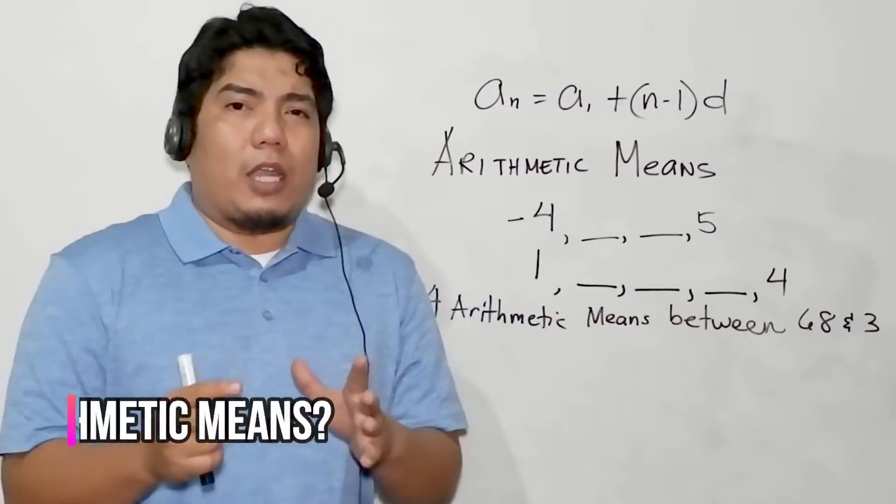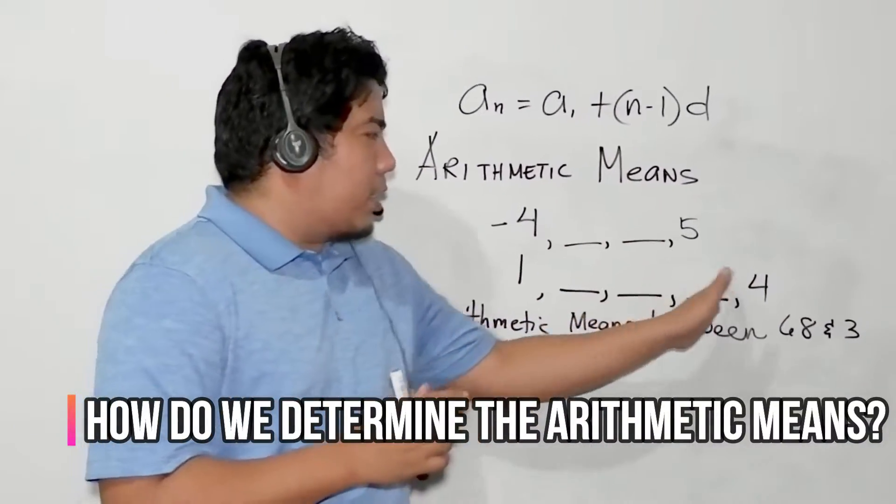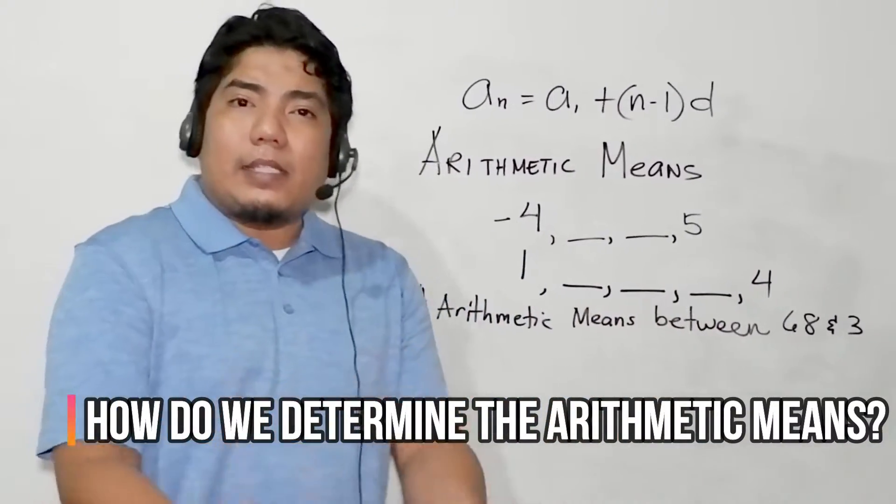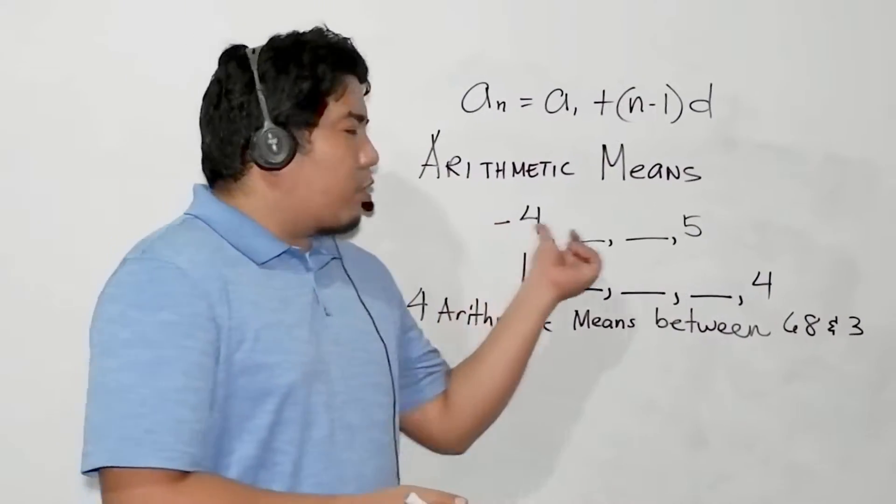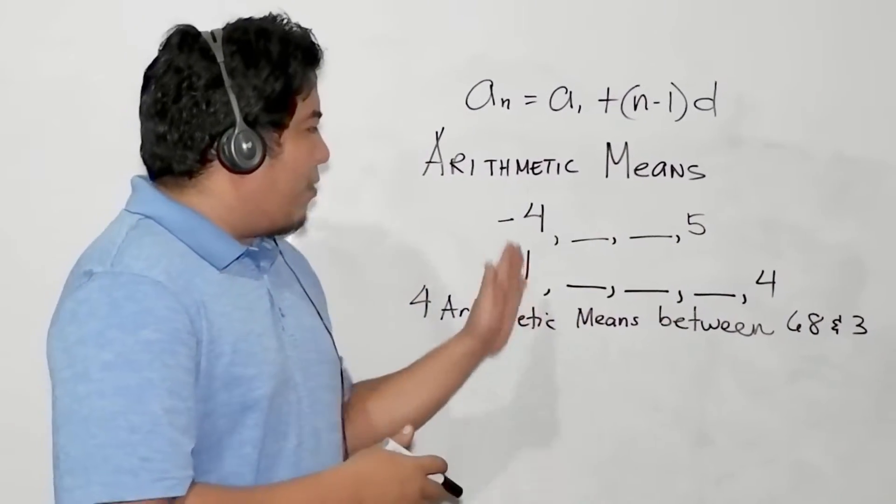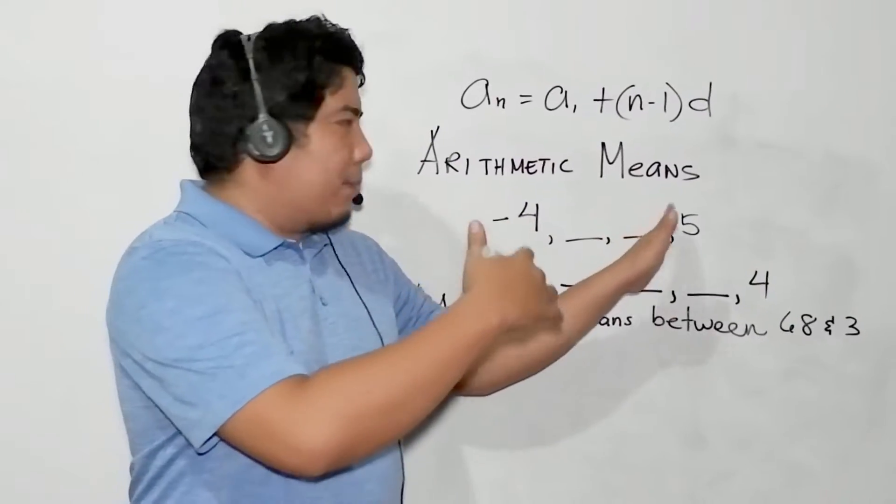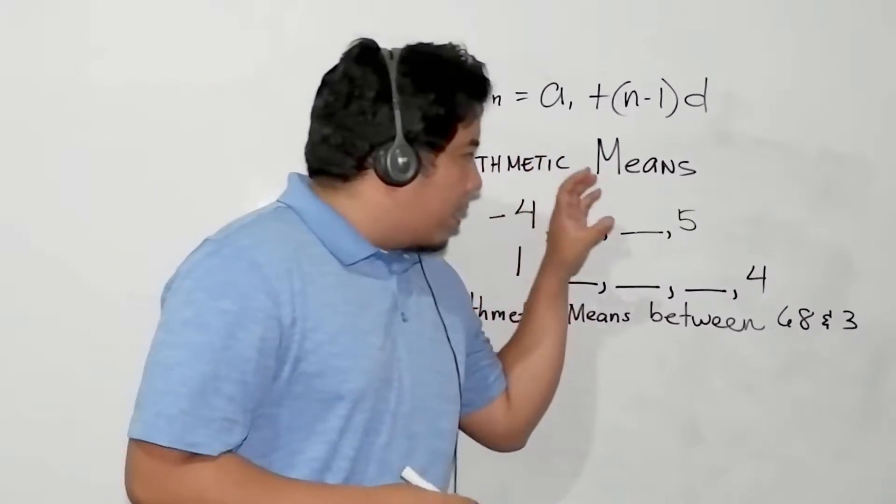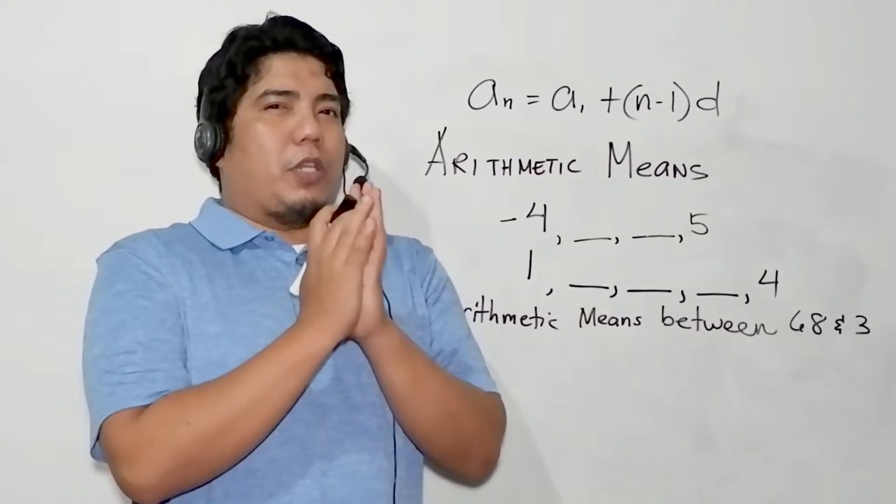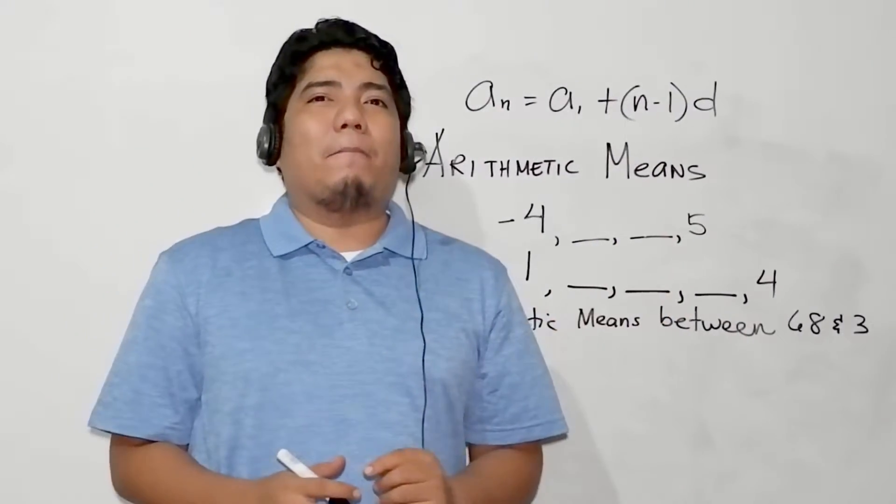Now, the question is, Sir Ash, how do we determine the arithmetic means of this given arithmetic sequence? Let's consider the first example. We have -4, blank, blank, positive 5, and this is an arithmetic sequence. Now, the question is, how do you get this one?